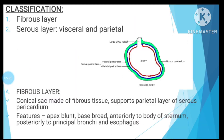Coming to the classification. The pericardium is broadly divided into two layers. The first is the fibrous layer. It is a conical sac made up of fibrous tissue, which supports the parietal layer of the serous pericardium. As you can see in the diagram, the violet color indicates the parietal layer and the green color indicates the fibrous layer.